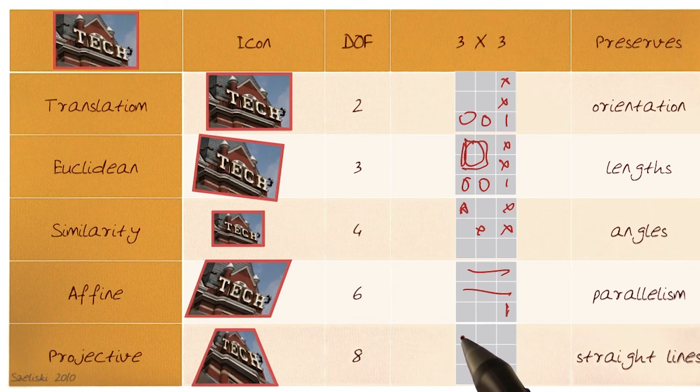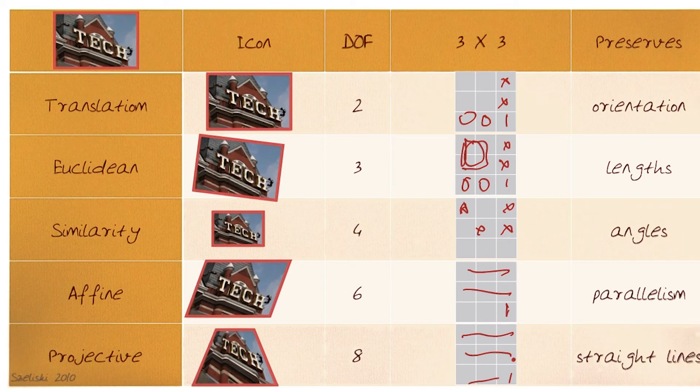Projective, eight degrees of freedom, all of these, this would be still one. Straight lines are preserved, parallelism is not preserved.